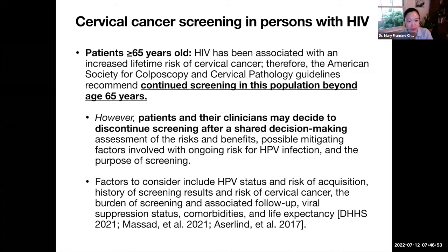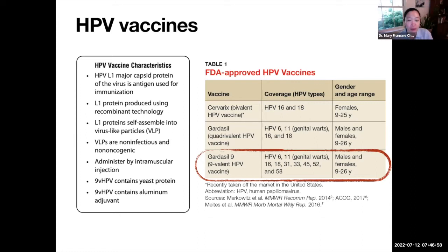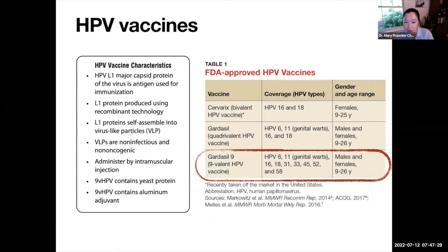An important aspect of prevention is the HPV vaccines. Cervarix was the bivalent HPV vaccine — it covered only HPV types 16 and 18 and was only for females aged 9 to 25. It is no longer available and was taken off the market in the US. There are two kinds of Gardasil: the quadrivalent, which covers types 6, 11, 16, and 18, recommended for males and females aged 9 to 26; and the Gardasil 9 — the nine-valent vaccine — which is now the standard and also covers the additional five higher-risk types: 31, 33, 45, 52, and 58, also for males and females aged 9 to 26.